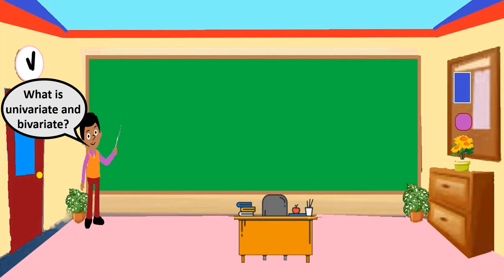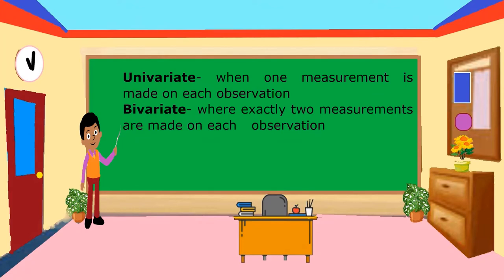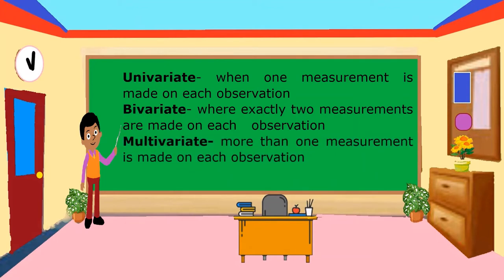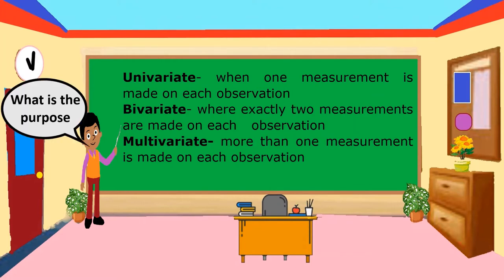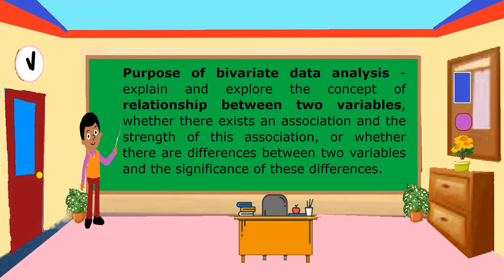What is univariate and bivariate? Univariate is when one measurement is made on each observation. Bivariate is where exactly two measurements are made on each observation. When you say multivariate, there are more than one measurement made on each observation. The purpose of bivariate data analysis is to explain and explore the concept of relationship between two variables — whether there exists an association and the strength of this association, or whether there are differences between two variables and the significance of these differences.